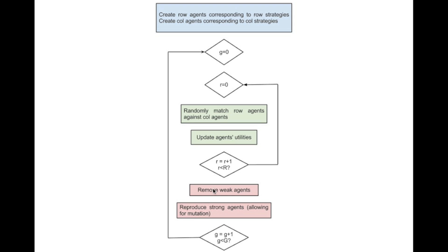Once those tournaments are done, you remove the weak agents and reproduce the strong agents, and it's very important to allow mutation. A strong agent might be one who, in the prisoner's dilemma, is a defector, but there's a probability that they'll actually mutate and become a cooperator.